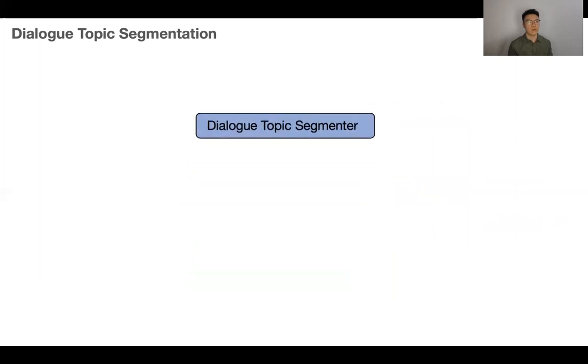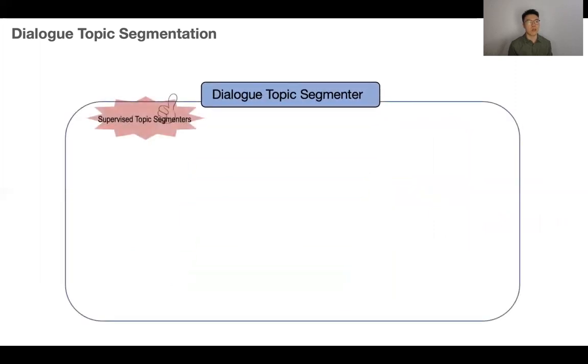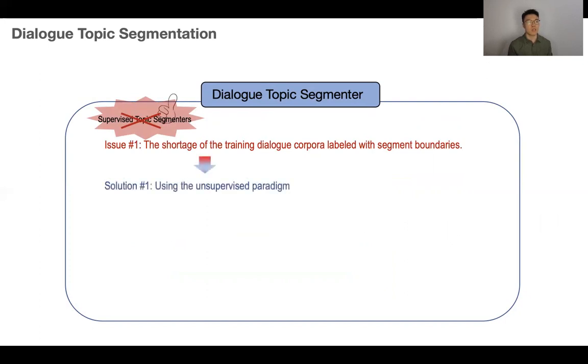Ideally, unsupervised dialogue topic segmenters should have good effectiveness. However, due to the shortage of training dialogue corpora labeled with segment boundaries, mainstream options are mostly unsupervised, like text tiling and its extensions, or later proposed BSEC and GraphSEC. Thus, the coherence measurement between utterances should be important and directly impact segmented performance.